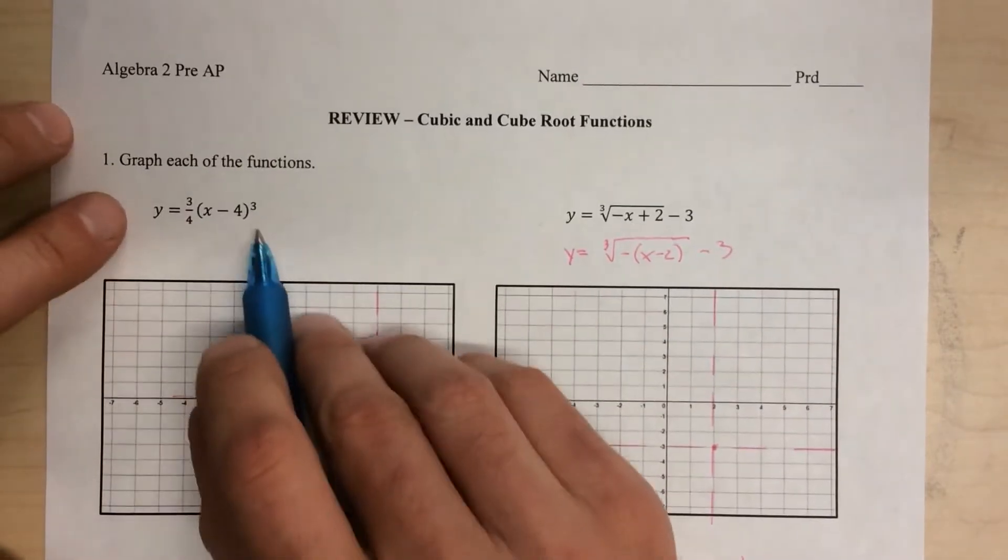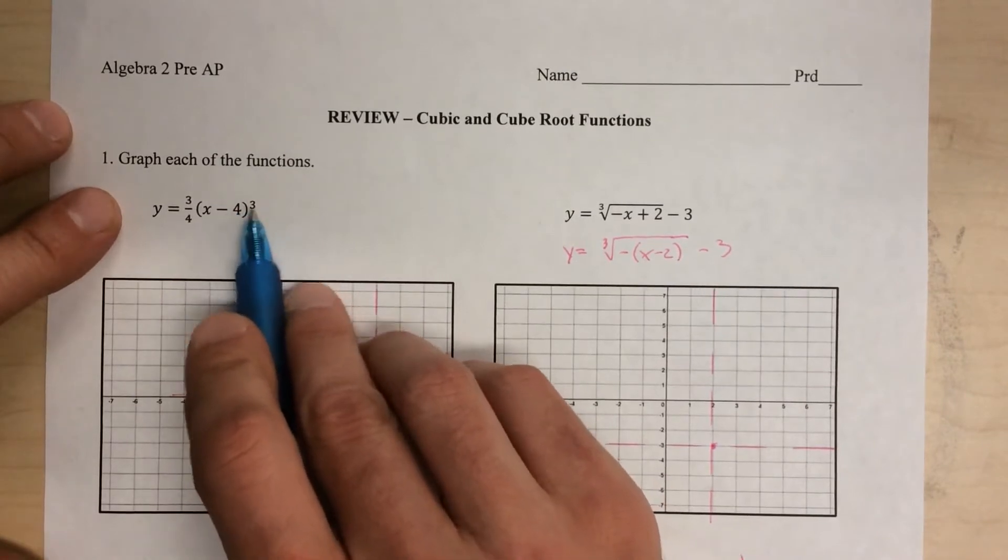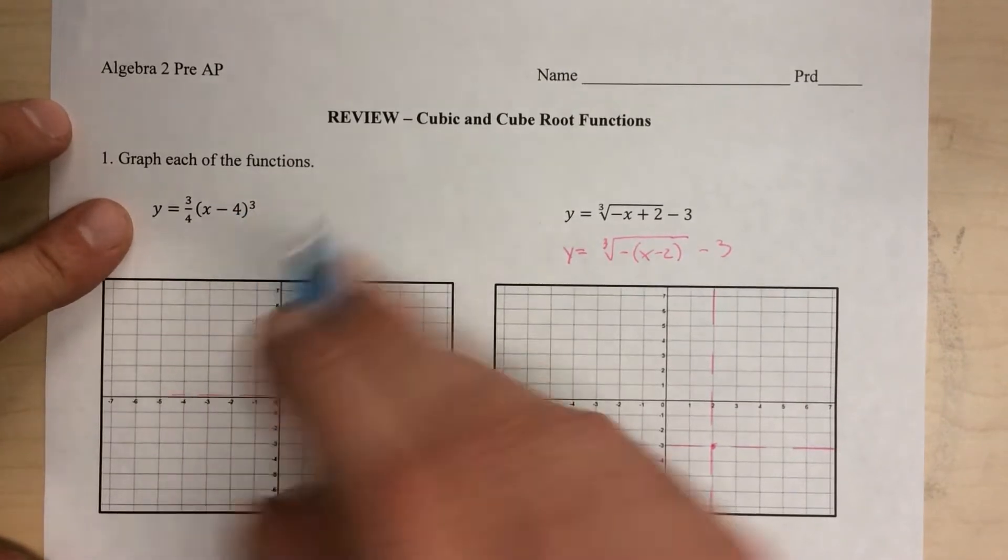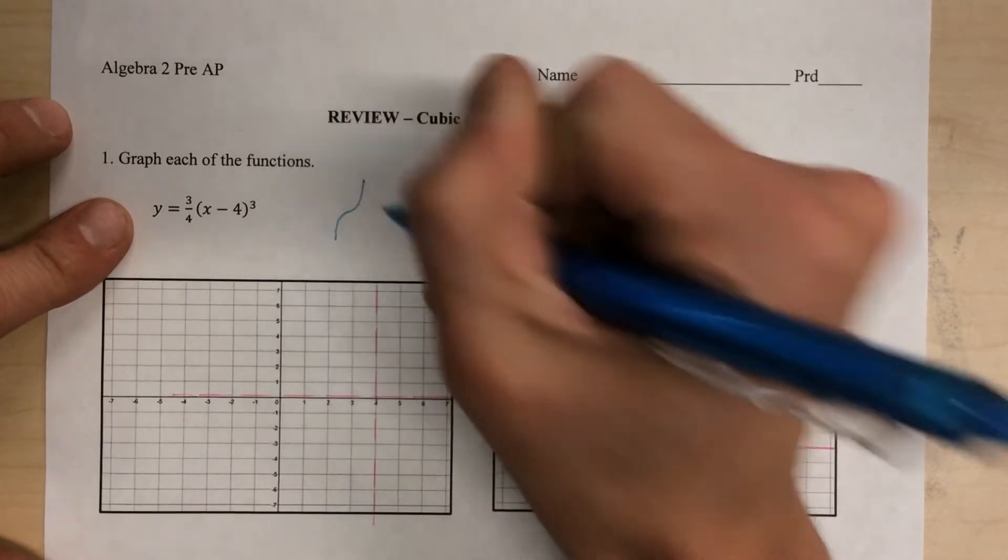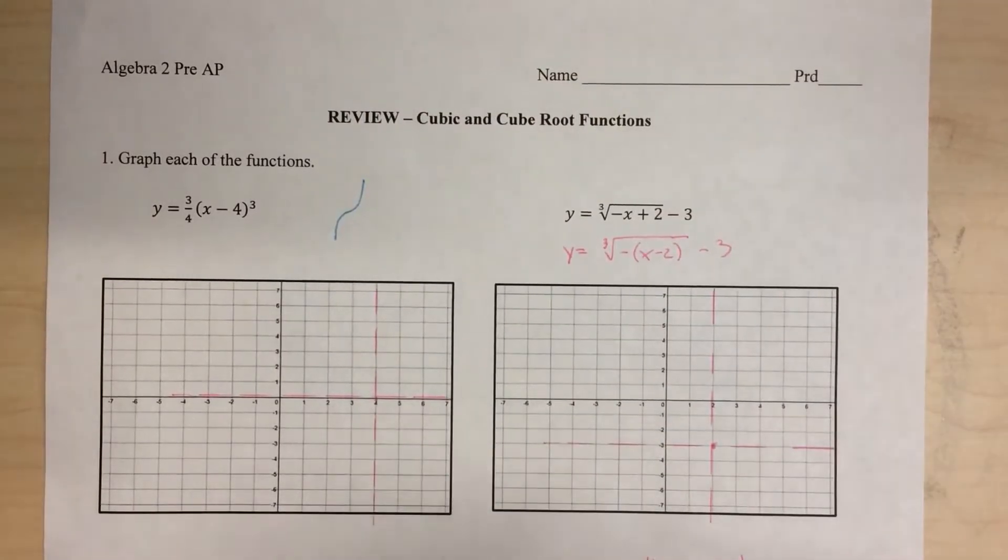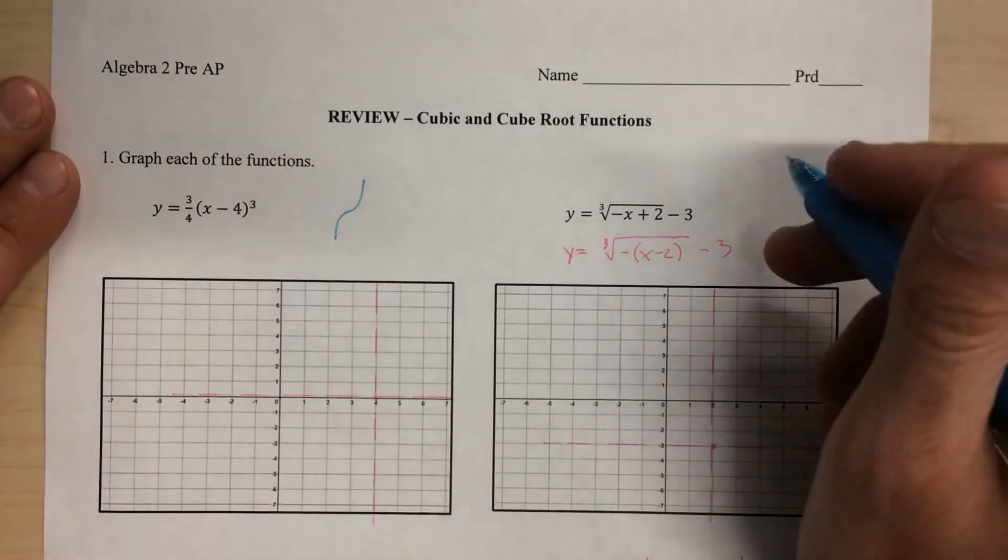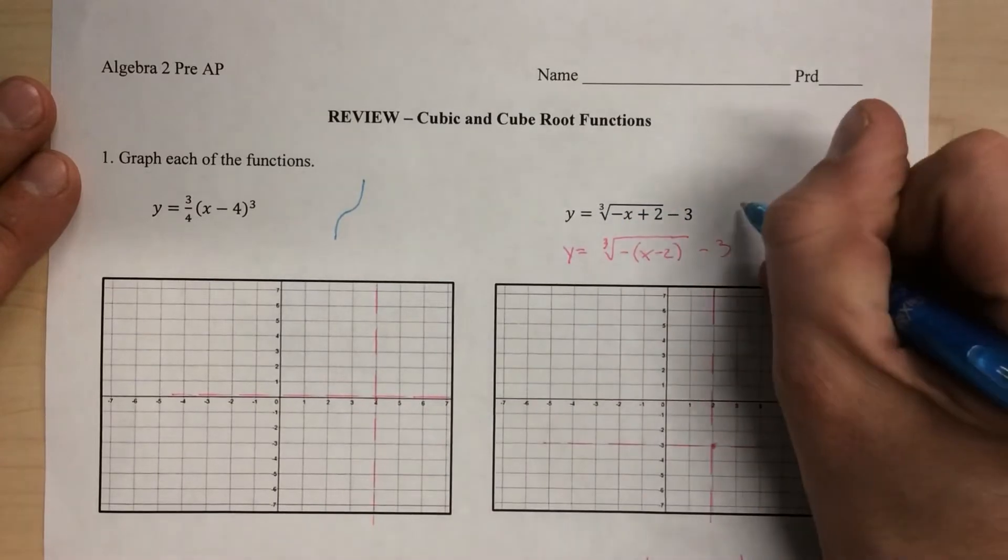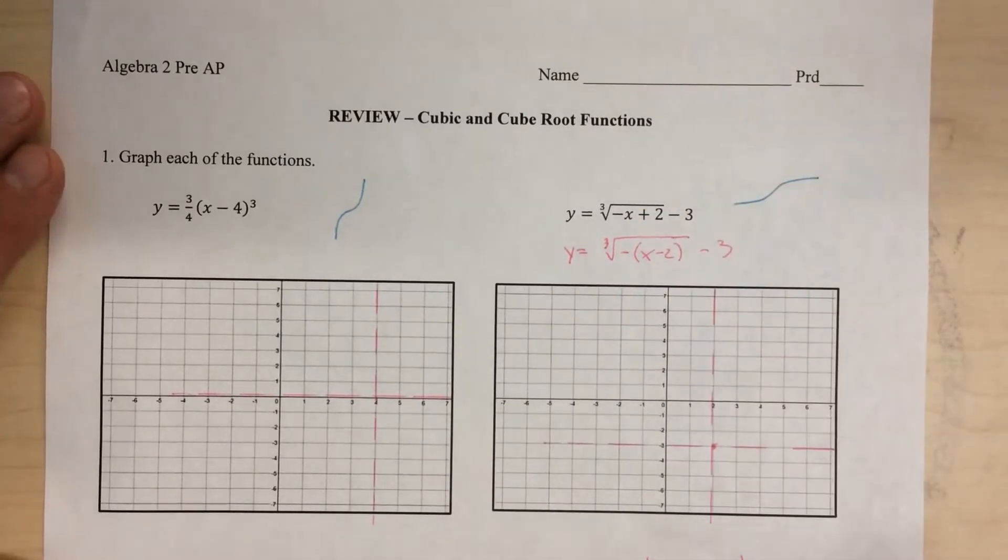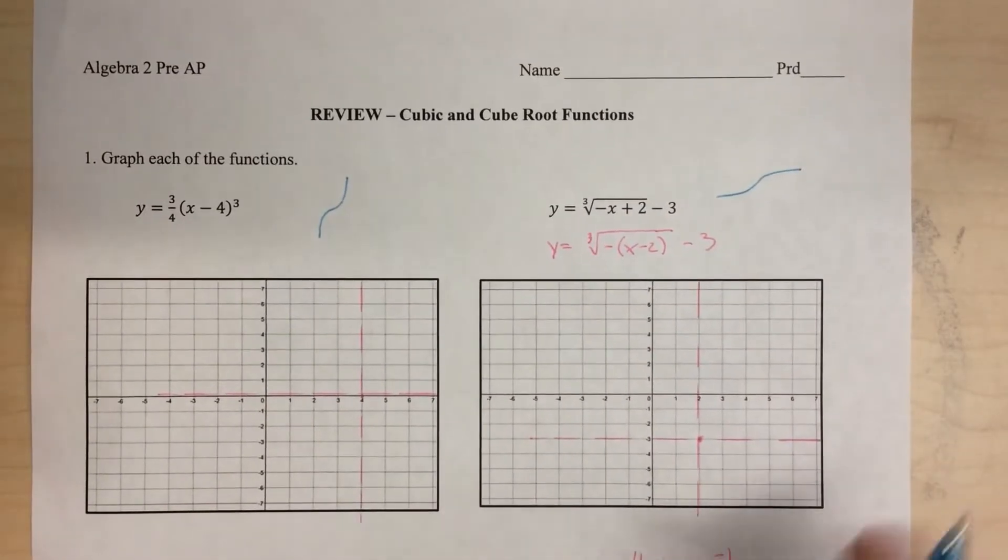As a suggestion, one thing that you could do from the very beginning is when you see what function it is, and we know this is a cubed, just sketch the parent function off to the side. Just have it as reference so you don't get tripped up and draw the wrong one. And this being the cube root, the parent function looks roughly like that.